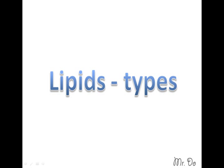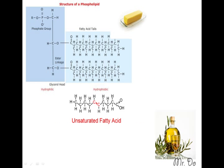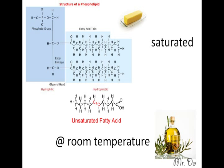There are two types of lipids: saturated and unsaturated fat. At room temperature, saturated fat like butter is solid, and unsaturated fat like oil is liquid. Saturated is Latin for 'full of' — in this case, full of hydrogen. Unsaturated has a double bond, so it has less hydrogen than saturated fat.